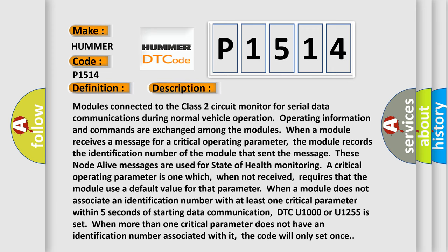Modules connected to the Class 2 circuit monitor for serial data communications during normal vehicle operation. Operating information and commands are exchanged among the modules. When a module receives a message for a critical operating parameter, the module records the identification number of the module that sent the message.